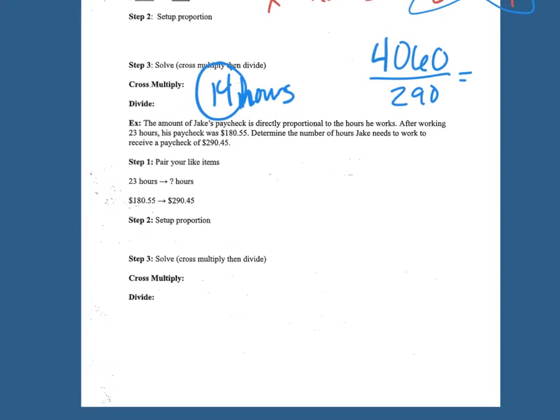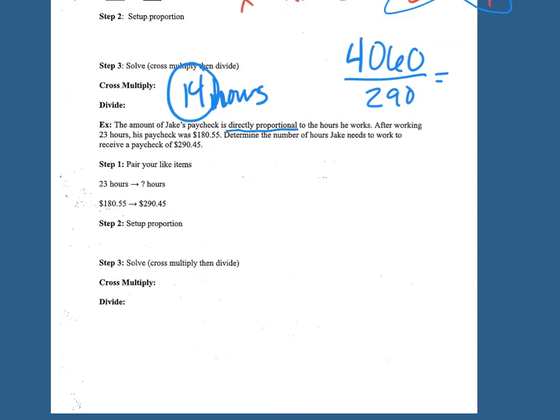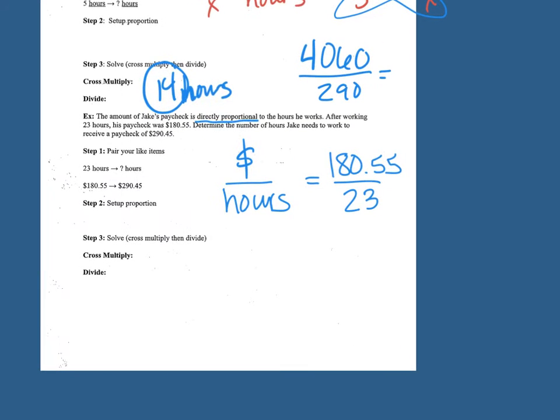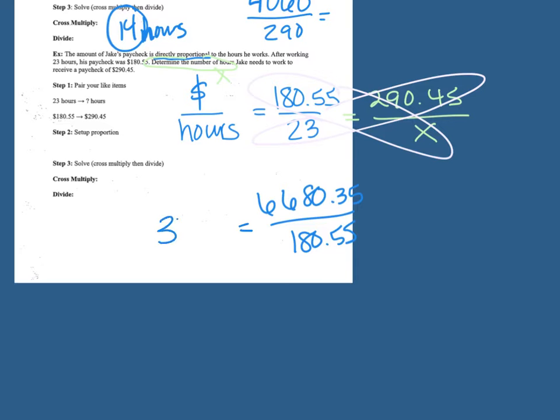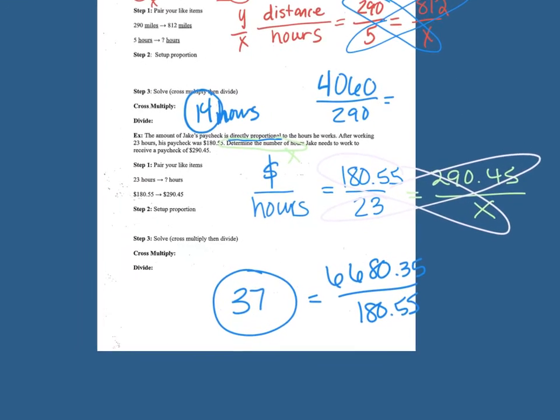Okay, couple more examples down here at the bottom. The amount of Jake's paycheck is directly proportional. So again, the amount of the paycheck, so the cost, the money, is directly proportional to the hours he works. So it's telling you how to set these up. After working for 23 hours, so I'm going to fill that part in, his paycheck was $180.55. Determine the number of hours. So that's what we don't know. Jake needs to work to receive a paycheck of $290.45. So we want to see how long it's going to take him to work to get a paycheck of $290.45. So same thing, we're going to cross multiply and divide. 37, so 37 hours to make $290.